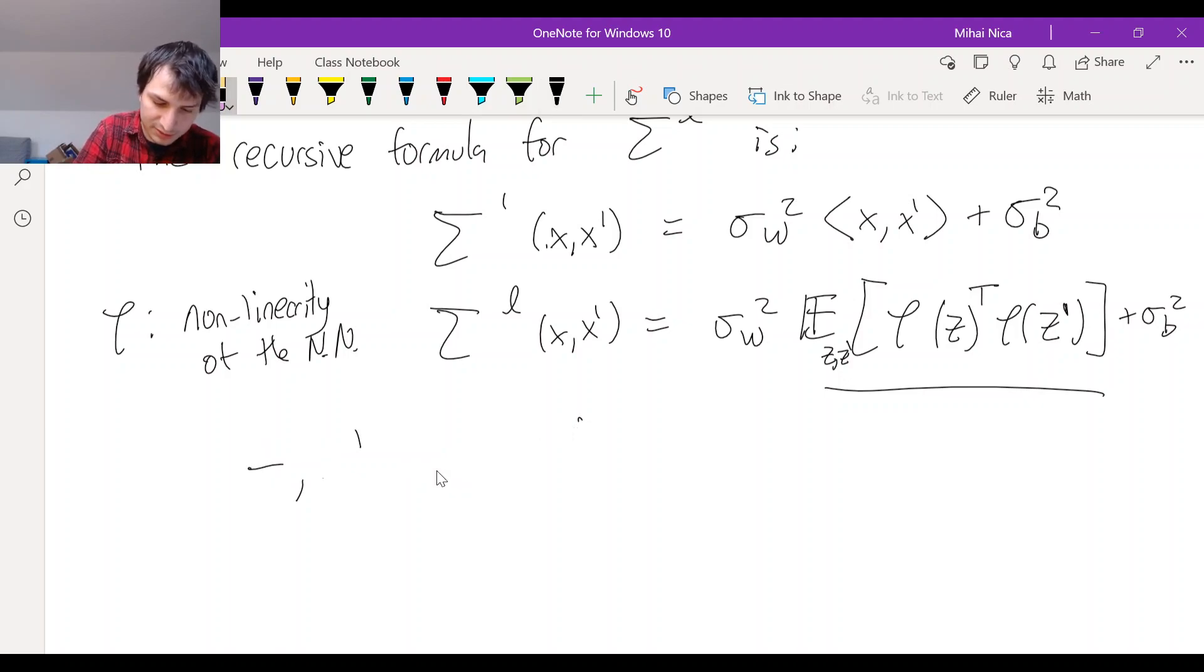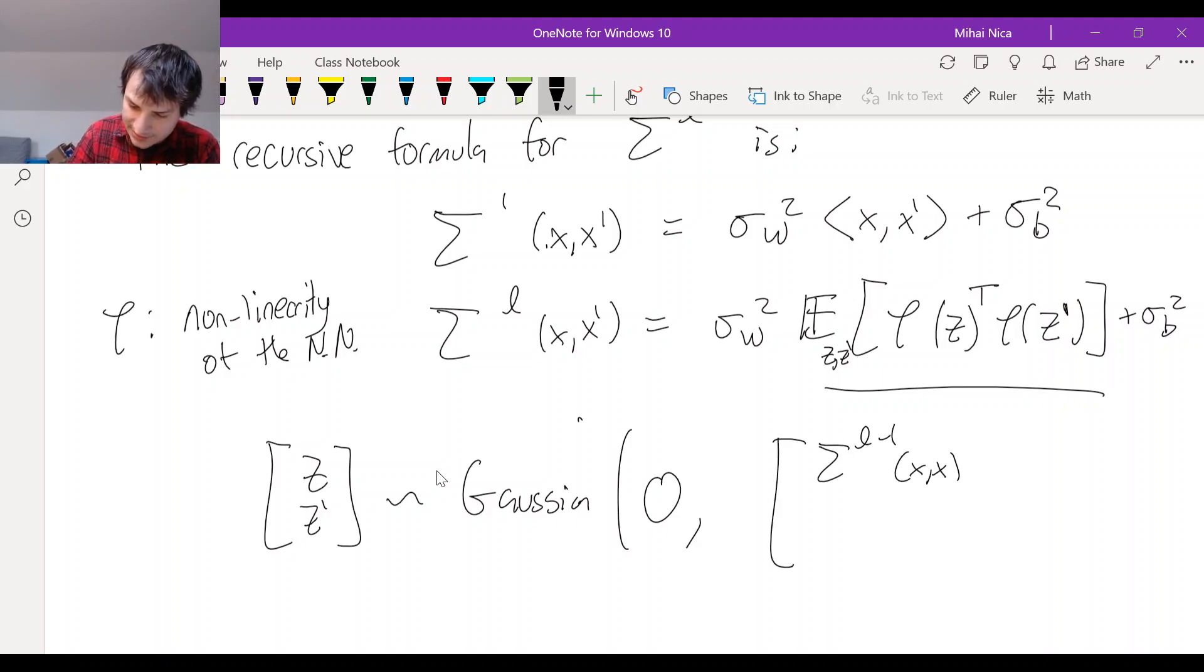Z and Z prime are Gaussian with mean zero and the covariance matrix that looks like this. Sigma L minus 1 of XX. Sigma L minus 1 of XX prime. Sigma L minus 1 of XX prime. This should be an X prime X prime. This is a L minus 1 of X prime X.